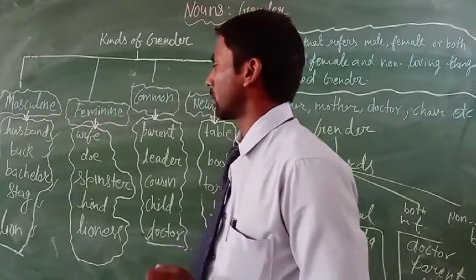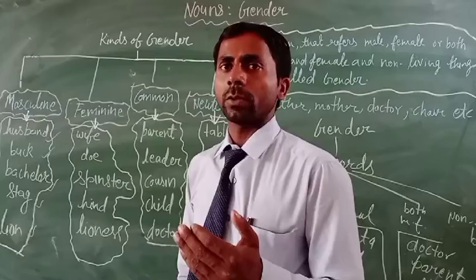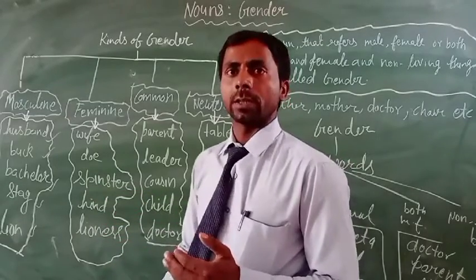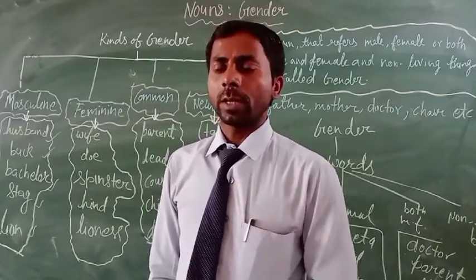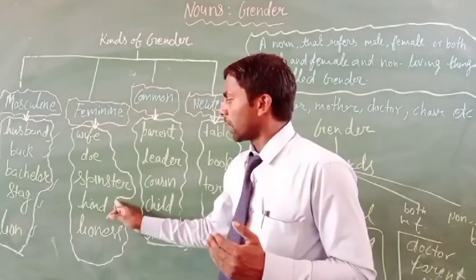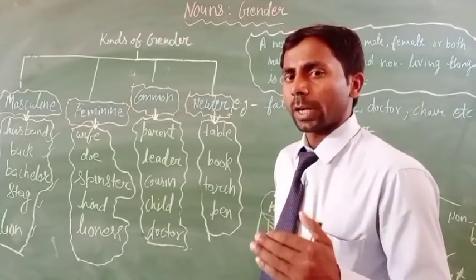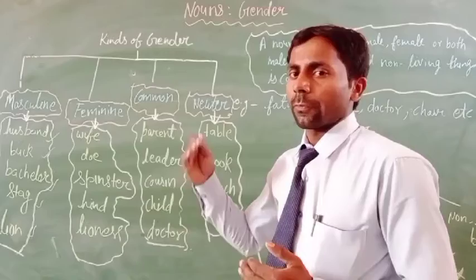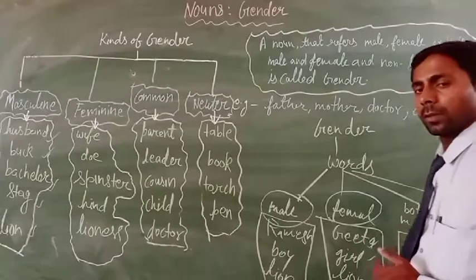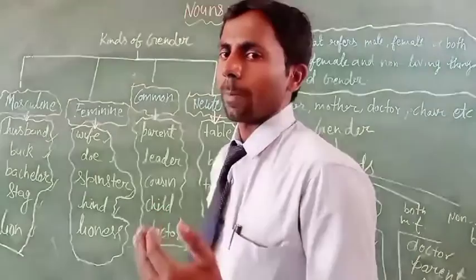Second is feminine gender. A noun is said to be in the feminine gender if it refers to a female. For example: wife, minister, and lioness. All these words refer to a female. A noun word that denotes female is called feminine gender — for example, Gita, girl, and lioness. All these words are feminine gender.